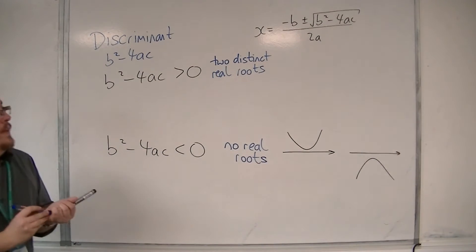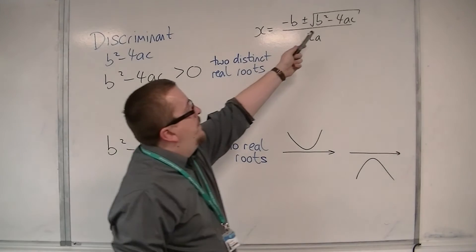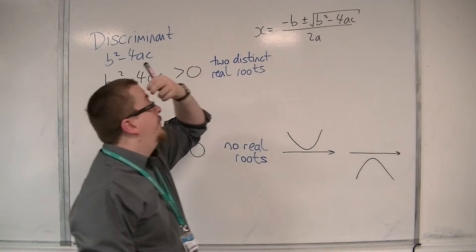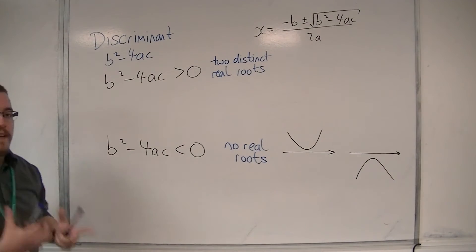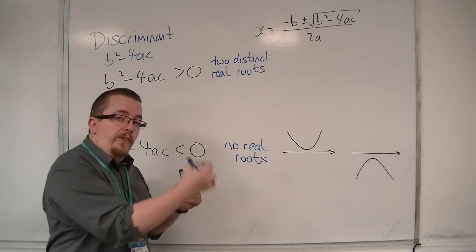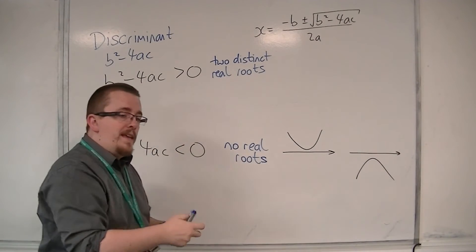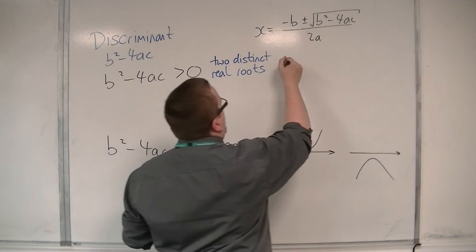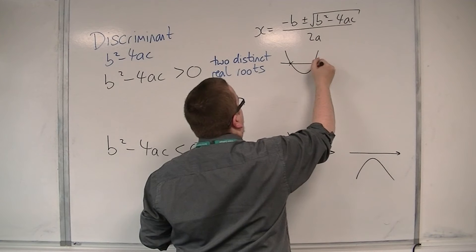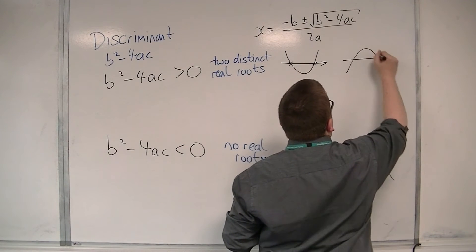Now what that means is that when that number below the square root symbol is positive, you get two distinct points where the curve is crossing the x-axis. And so you will find that the curve would cross at two distinct points like that, or like this.